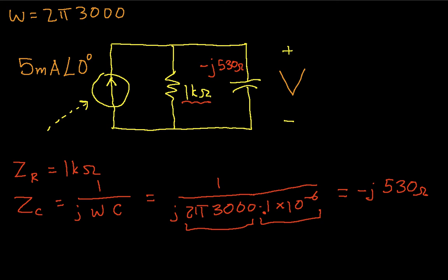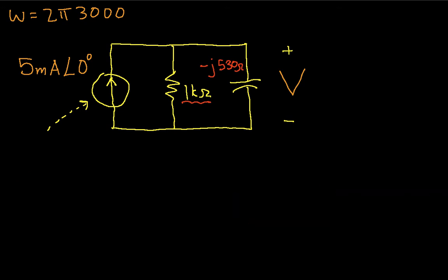Step three is to use the techniques from circuit analysis that we know to solve for the thing we want to solve for, which in this case is V. So in this case, I think the easiest way to solve this circuit would be to find the equivalent impedance of the resistor and the capacitor. You can see they're both in parallel. Once I have the equivalent impedance, then I can multiply that by the current to get the voltage.